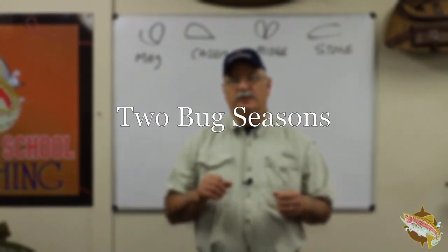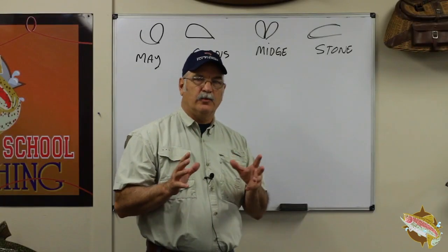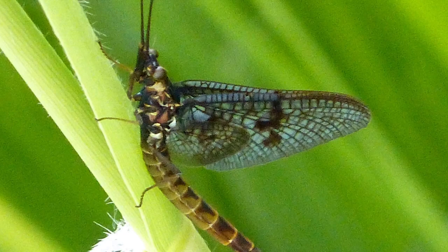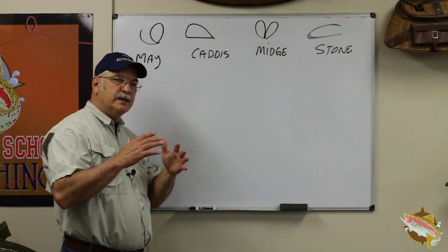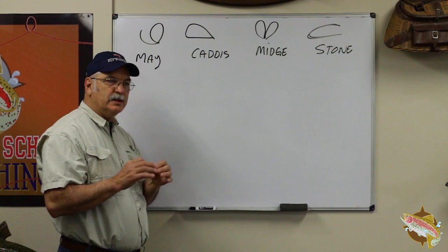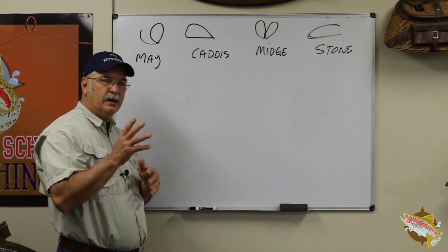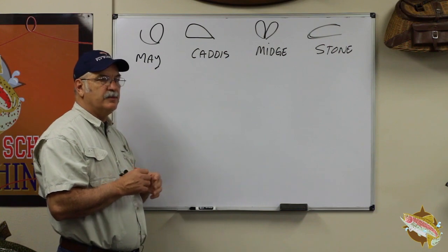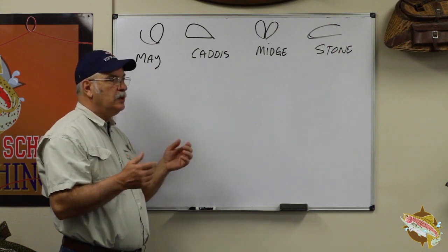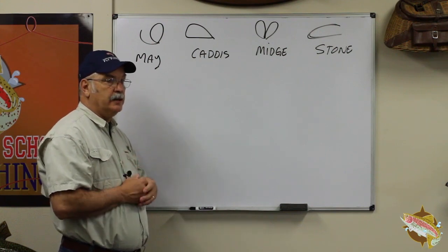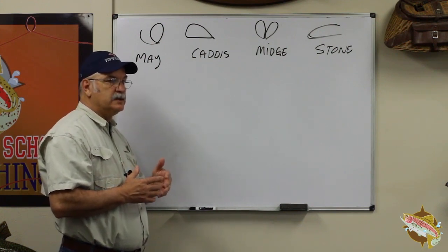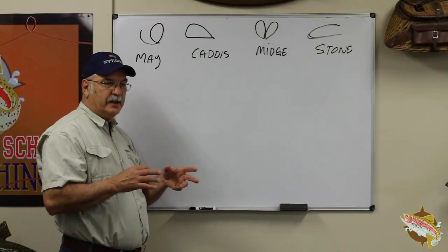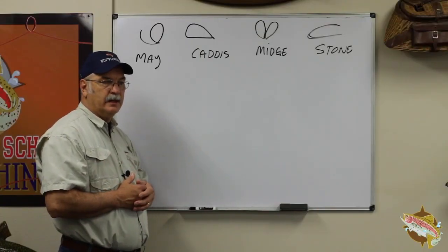We've established what these four bugs are — let's take a look at them. A real mayfly has an upright wing that is straight up, with long tails. We classify mayflies by the color of their wing, the color of their body, and their size. Mayflies are really cool — they're on the water for a day or two and then they're gone. The nymph for a mayfly is a creepy crawly thing — crawlers, swimmers, clingers — living underwater for about a year before they emerge and hatch.